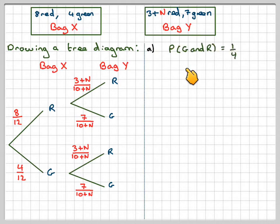Now the probability of a green and a red was given to be 1 quarter. So a green and a red we get from this one here. So that's going to be 4 twelfths times 3 plus N over 10 plus N, this one here. So first of all we can cancel this down. That's equal to a quarter.